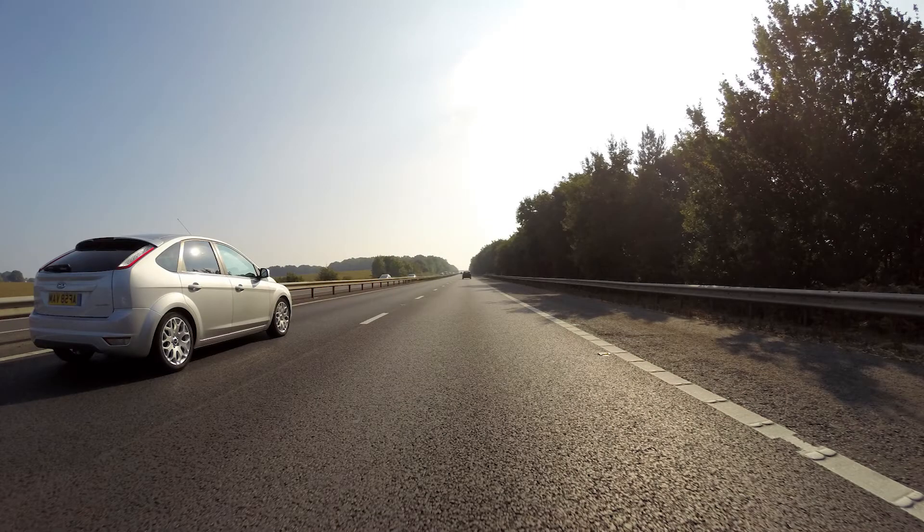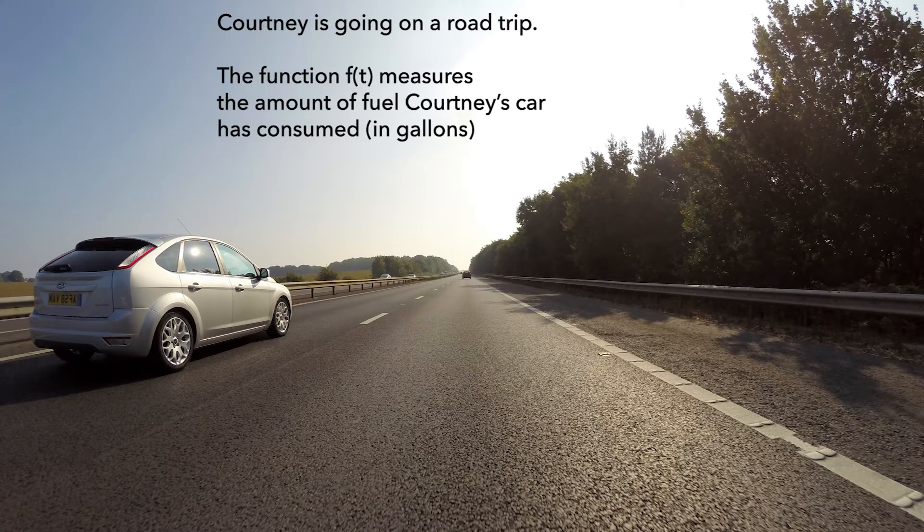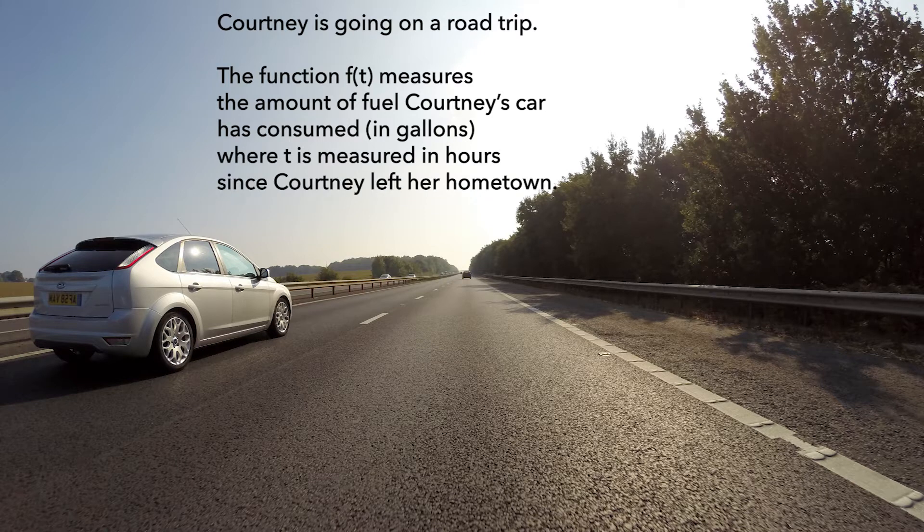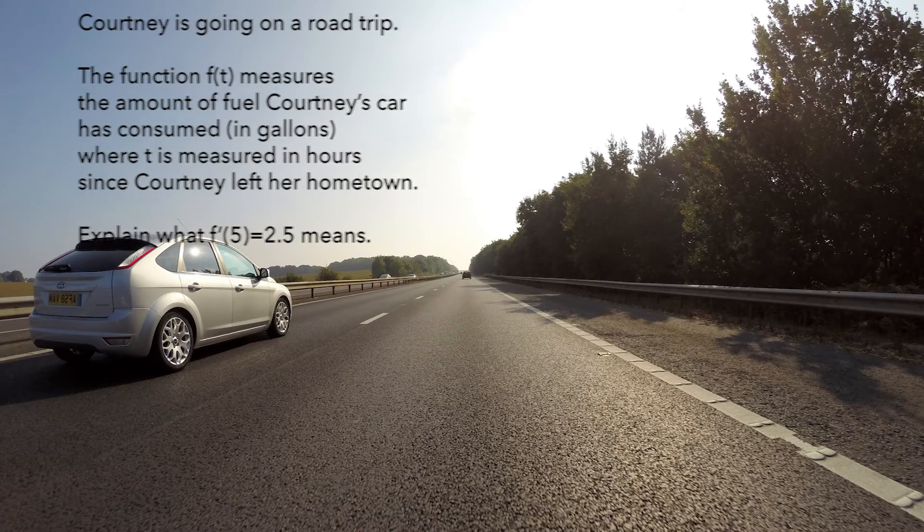In this video, you will see Kelly and Maria working on the following problem. Courtney is going on a road trip. The function f measures the amount of fuel Courtney's car has consumed, in gallons, where t is measured in hours since Courtney left her hometown. Explain what f'(5) = 2.5 means. As they work, consider the understandings they express and determine if their reasoning is valid.